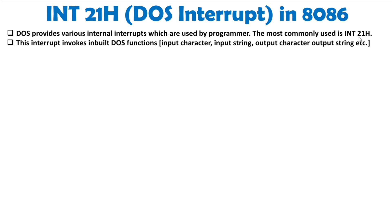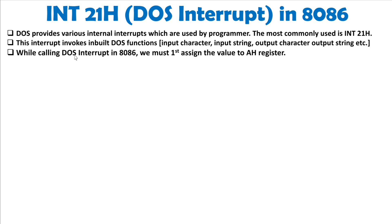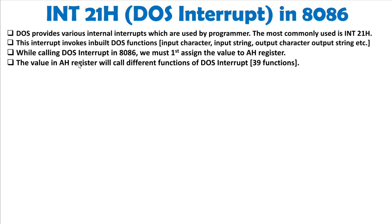To use all these DOS functions, you must use the INT 21h interrupt. Before calling DOS interrupt, you must assign the appropriate value to the AH register first. Based on the value loaded into AH, different DOS functions will be called. The AH register selects from almost 39 different functions available with the DOS interrupt for 8086.